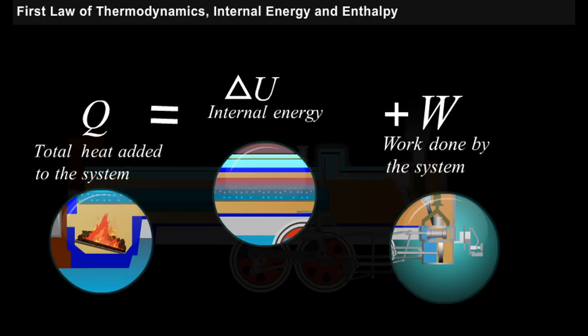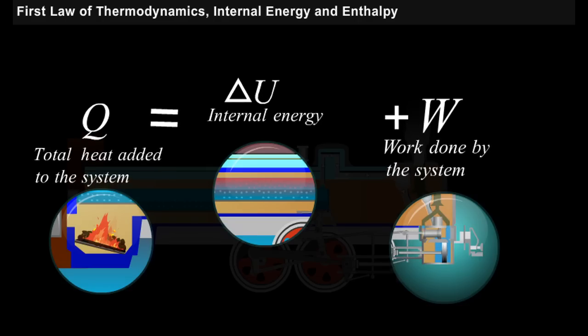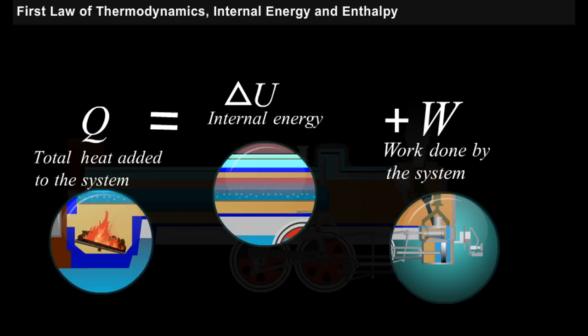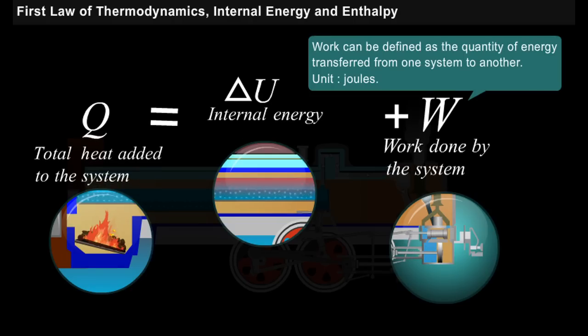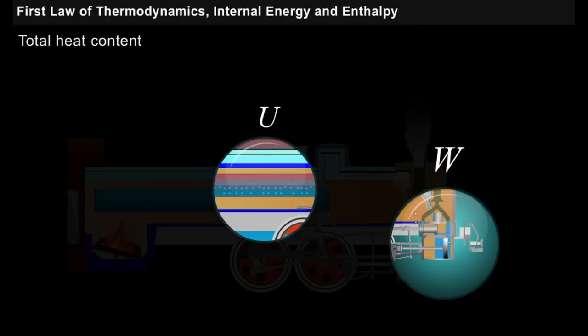Now, the total heat supplied Q is equal to delta U plus W. Work can be defined as the quantity of energy transferred from one system to another, and the work is measured in joules. Let us see the total heat content of this system, which is the sum of total internal energy U and work done W.